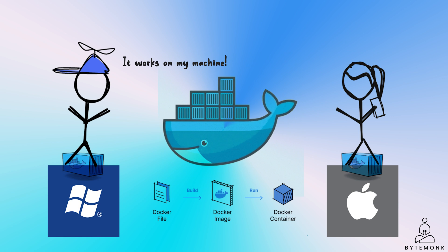You create a Docker image, which is like a snapshot of your application environment, and then share it with others. When your teammate runs the Docker container, they get an identical environment, ensuring that your program works consistently across different machines. Docker streamlines the development and deployment process, promoting collaboration among team members and eliminating the 'it works on my machine' issues. By encapsulating everything needed for the program to run in a Docker container, it becomes a portable unit that guarantees consistency across various systems.